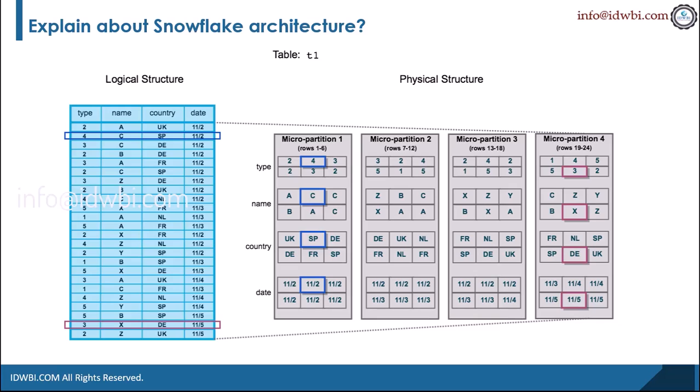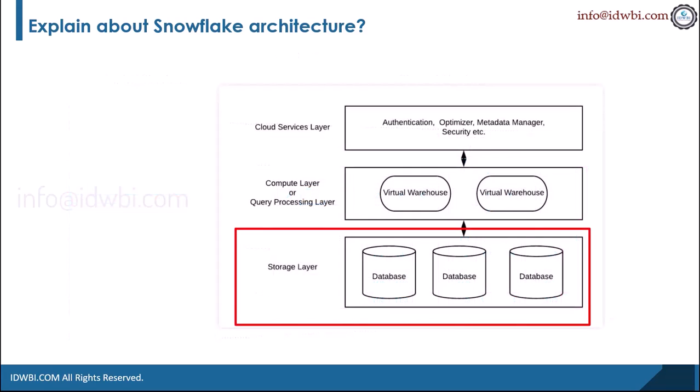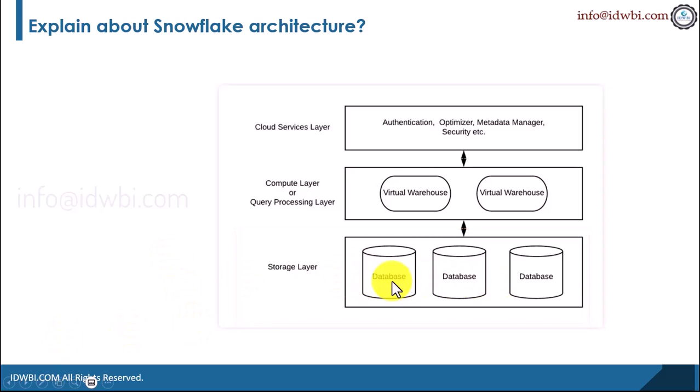Storing data in multiple micro-partitions, optimized and compressed, means users do not have to worry about data distribution across multiple nodes in the shared nothing model. However the backend distributes, compresses or stores the data, users can simply write a query and pull that information. The storage layer is architected to support scaling of storage independent of the compute layer.